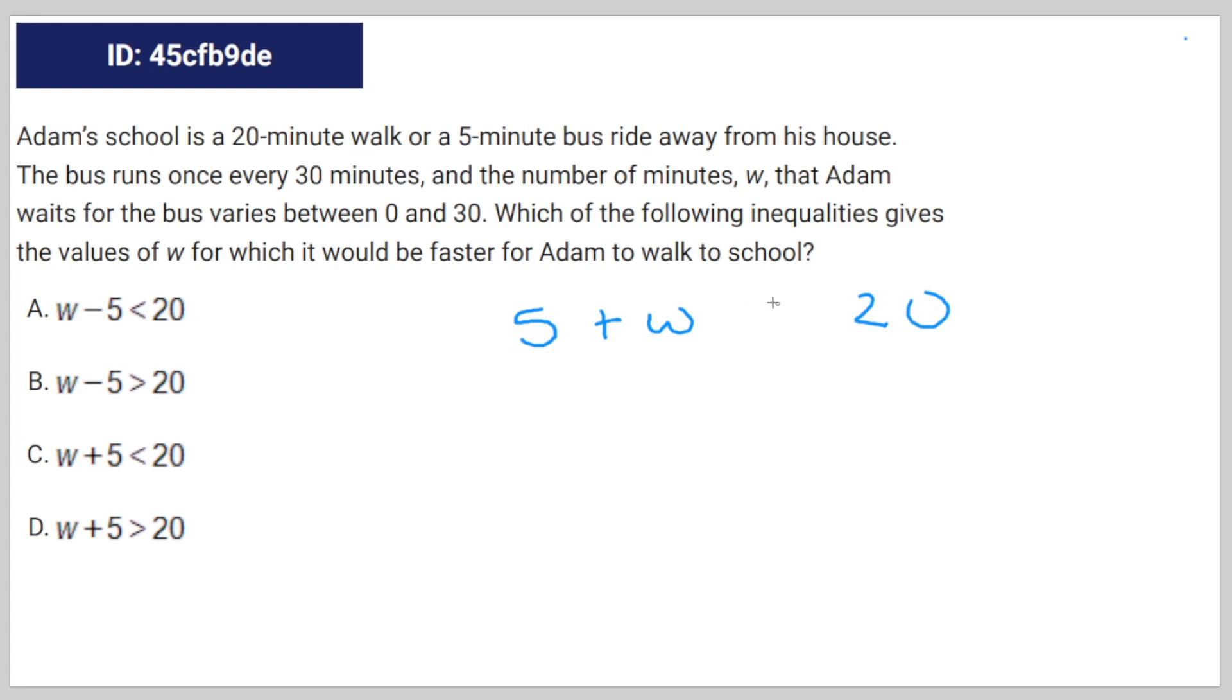Now we have to, in order for it to be faster for Adam to walk to school, 5 plus W has to be greater than 20, because a greater amount of minutes is slower.